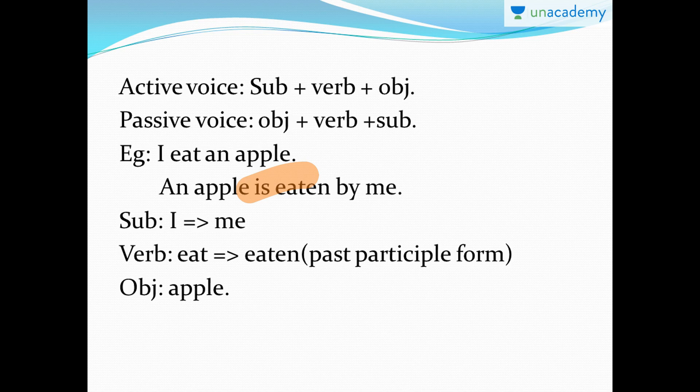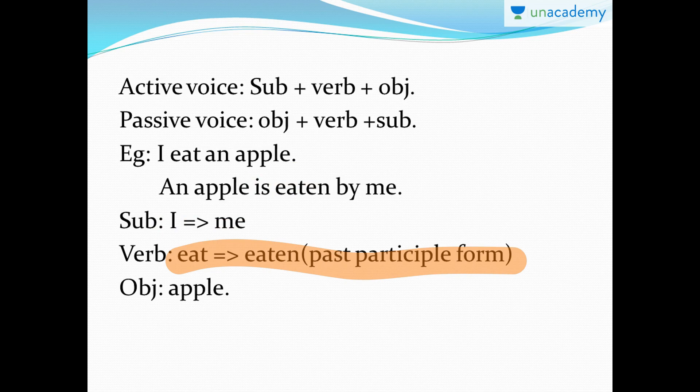'Is' is always present for simple present tense. For the first person it will be 'am'; you are, he or she is, we are, they are. If you remember that conjugation, this formation will become much easier. Subject 'I' turns to 'me', verb 'eat' becomes 'eaten' in past participle form, and the object 'apple' remains the same. You can never change an object.